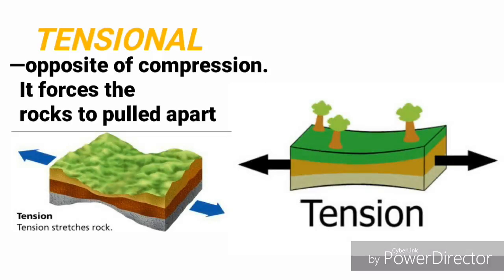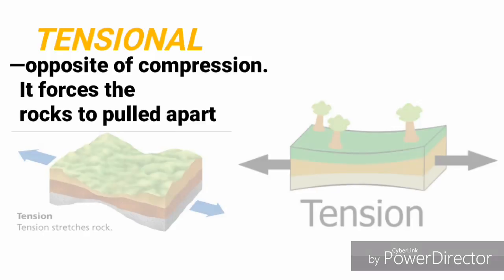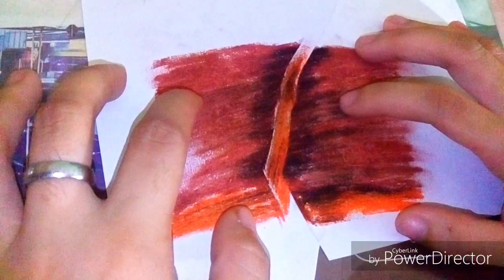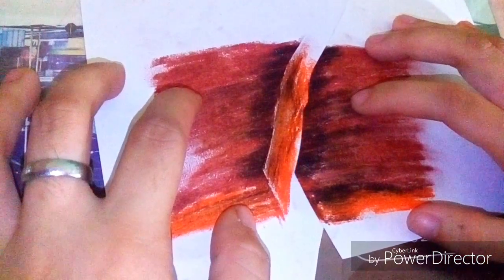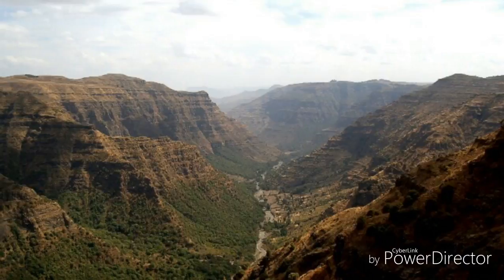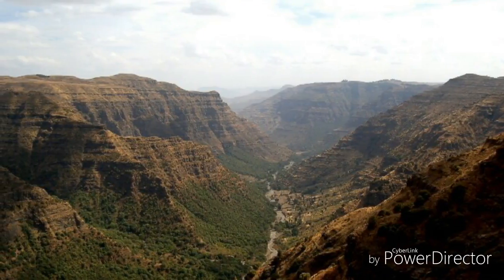Tension is the opposite of compression stress. While compression forces the rock and crust to collide and move together, tension forces the rocks to pull apart. Tension stress caused the ancient massive continent Pangea to break off into the seven continents we have today.